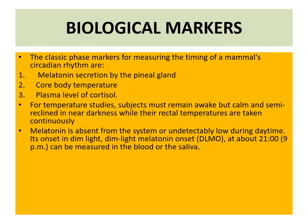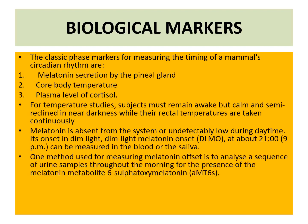Its onset in dim light — dim light melatonin onset — is at about 9 p.m. It can be measured from blood or saliva. One method used for measuring melatonin offset is to analyze a sequence of urine samples through the morning for the presence of the melatonin metabolite 6-sulphatoxymelatonin, i.e., AMT6S.